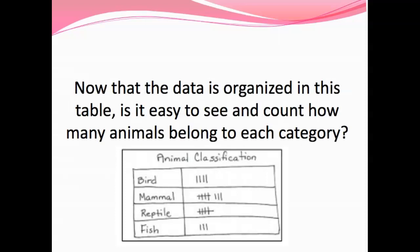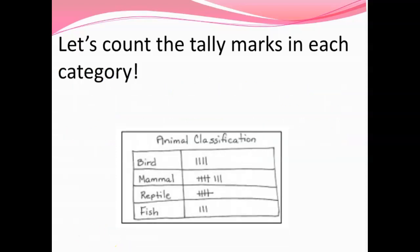Now that the data is organized in this table it is easy to see and count how many animals belong in each category. Let's count the tally marks in each category. Birds: one, two, three, four — there are four birds. Mammals: five, six, seven, eight. Reptiles: five — we can see that really quickly because it has that slash across. And fish: one, two, three. Check this against your chart to see if you got the same data.